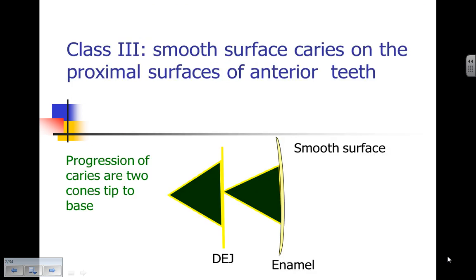Reviewing what we've already learned about classifications of caries lesions and restorations: a Class 3 is a smooth surface caries lesion on the proximal surfaces of anterior teeth. The progression of caries on the smooth surface is very broad, sitting below the contact area. Bacteria attack and penetrate the enamel, forming a cone where the tip reaches the DEJ and spreads along it, then follows the dentinal tubules towards the pulp.